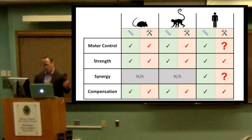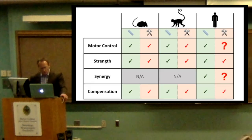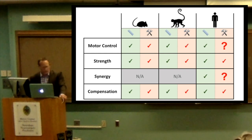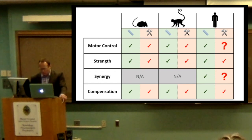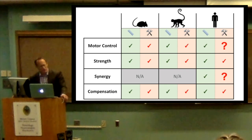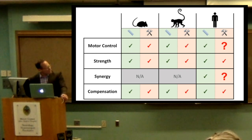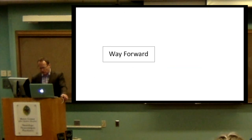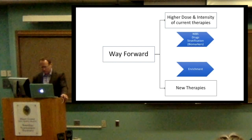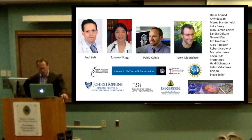In summary, there are four components to the motor deficit: the control component, the strength component, the synergy component, and the compensation component. Under the human column we have two big question marks — for motor control, our trial suggests you can improve negative symptoms in the human, but we haven't yet solved the synergy problem. The movement disorder remains a red question mark. Thank you.